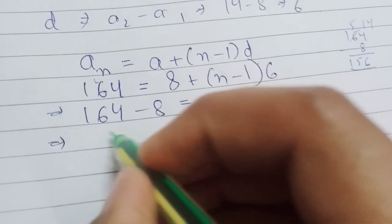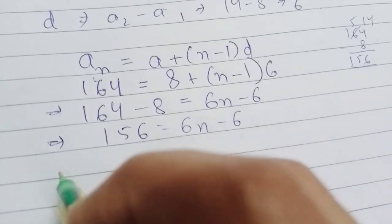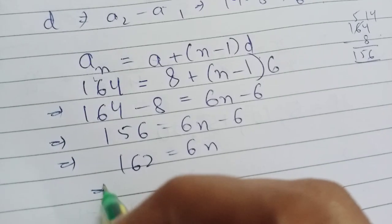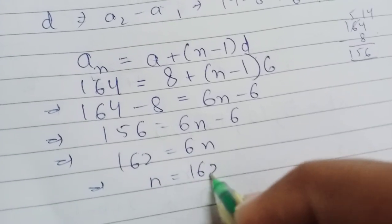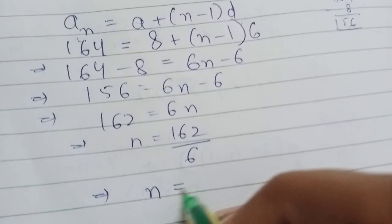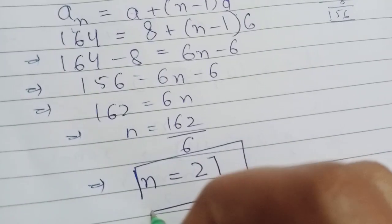164 minus 8, this will be 156 is equal to 6n minus 6. 162 is equal to 6n. n is equal to 162 by 6, n is equal to 27.